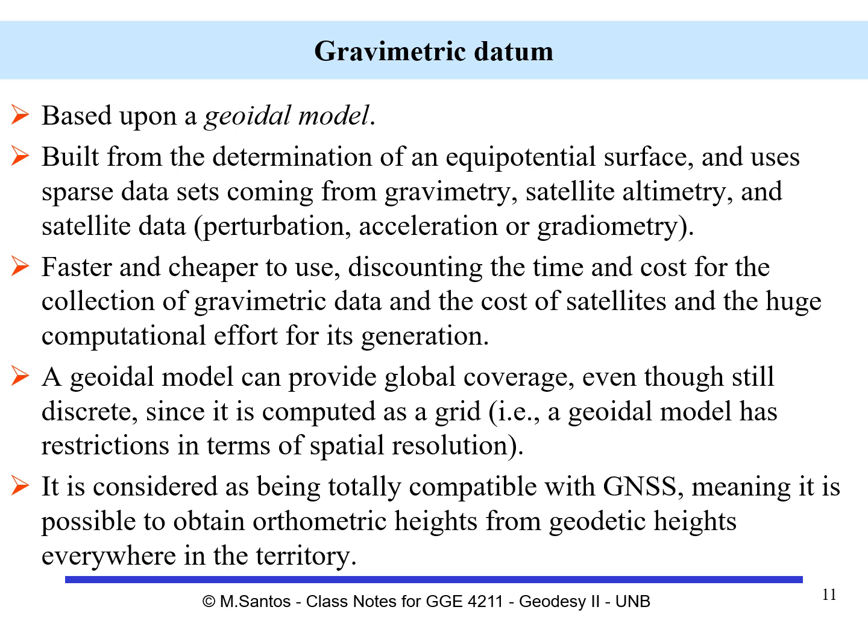A gravimetric datum is faster and cheaper to use, but this statement comes with a caveat — because we have to discount the time and cost for the collection of gravimetric data, the cost of satellites, and a huge computational effort for the generation of a geoidal model. So it's not that cheap. A geoidal model can provide global coverage, unlike tide gauges which are located at specific sites. On the other hand, the geoidal model is still discrete because it is computed as a grid, and therefore has restrictions in terms of spatial resolution.